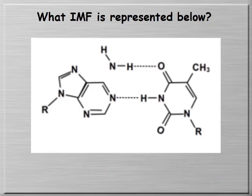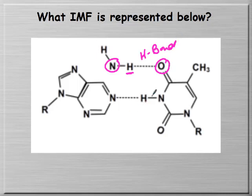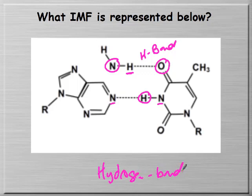In the last example, the IMFs are shown as dotted lines. We have hydrogen attached to an N and attracted to an O—that's a hydrogen bond. We also have an H attached to an N and attracted to an N—also a hydrogen bond. You also have some dipole-dipole and LDF occurring, but the strongest force is a hydrogen bond.